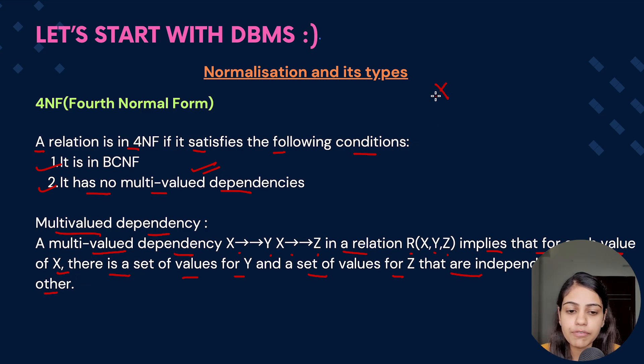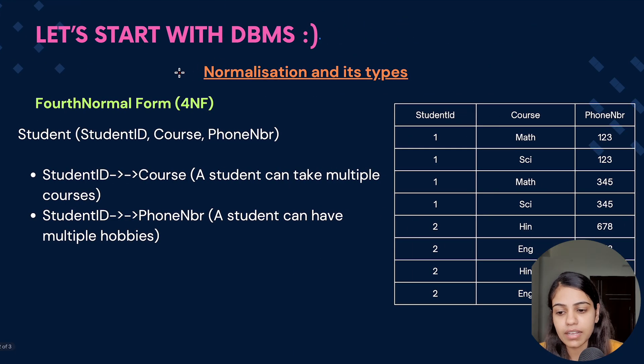So according to multi-valued dependency, if X is having a multi-valued dependency on Y, for every value of X there would be multiple values of Y. Or if X is having a multi-valued dependency on Z, for every value of X there would be multiple values of Z. So let's understand from an example.